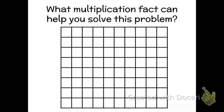When I look at this array right here I can think to myself what multiplication fact can help me solve this problem? Well on this one I'm noticing that I have 1, 2, 3, 4, 5, 6, 7, 8, 9, 10 across this side. So I'm going to write that down.